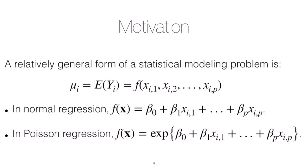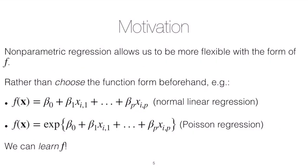In a generalized linear model, we relaxed the second assumption and allowed the response to come from the exponential family. Often this changed the form of f — for example, in Poisson regression our f becomes e raised to the linear predictor.